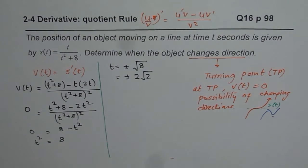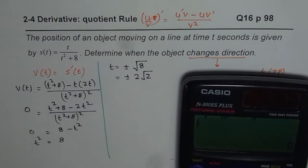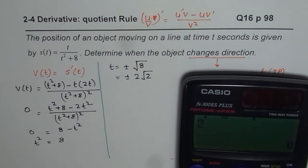So, there are two possible times when this function could change the direction. Now, we are not really given whether the time is greater than 0 or not. That is not given to us.